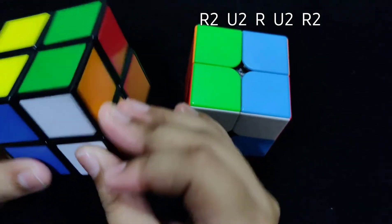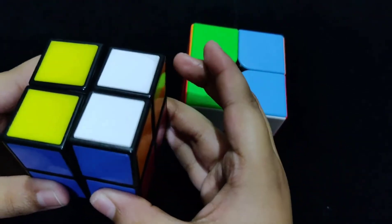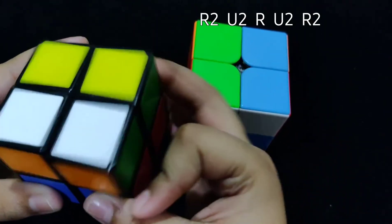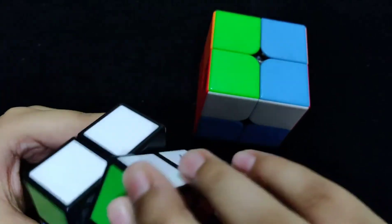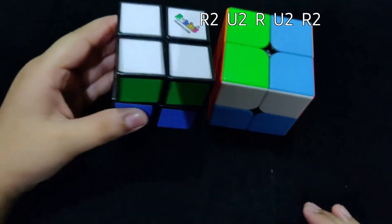R2, U2, R, U2, R2, and then you will have your cube solved.